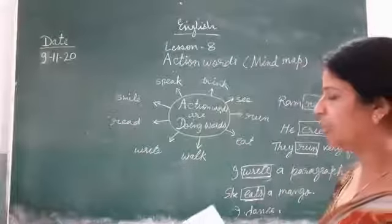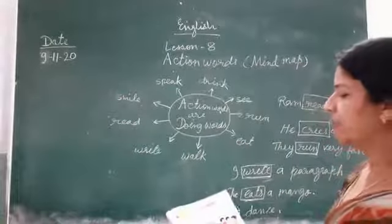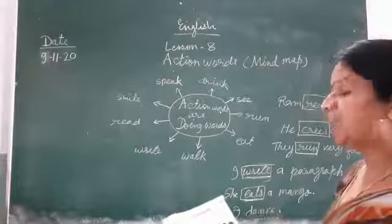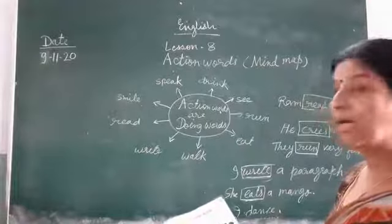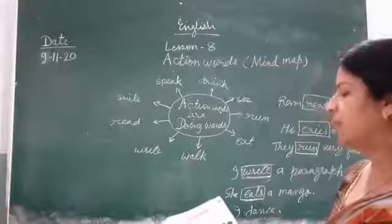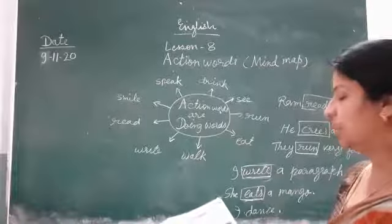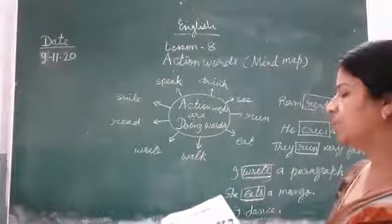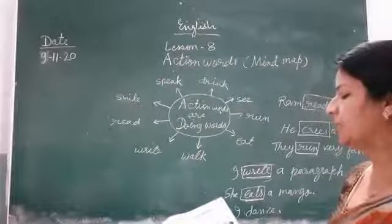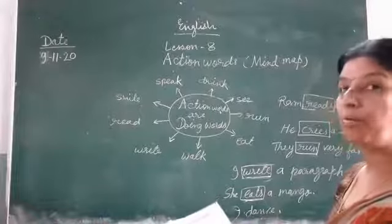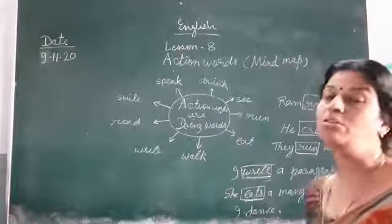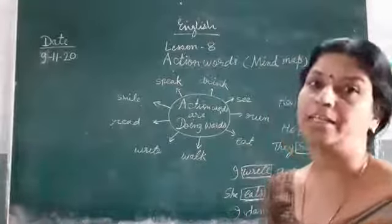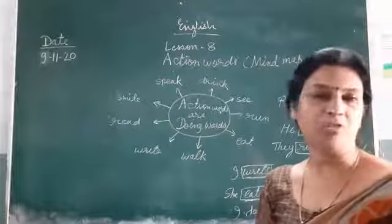Action words — say this rhyme with your friends and do the action for each action word: Hop here, jump there, come here, go there. Smile a little, laugh a lot. Walk away, trot trot. Scream a little, sing a lot. Put your hands together, clap a lot. You can underline the action words.